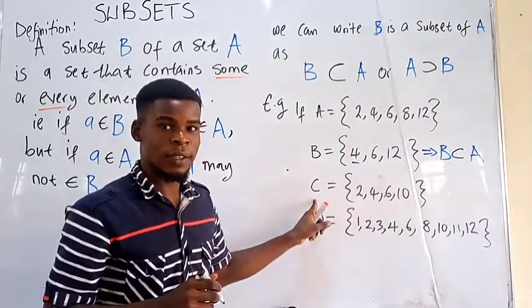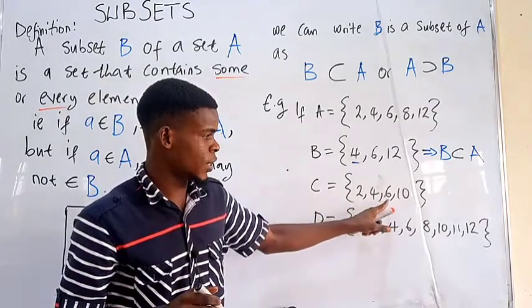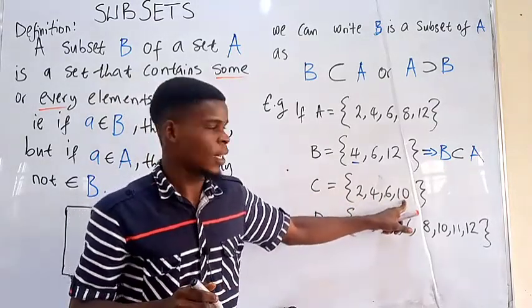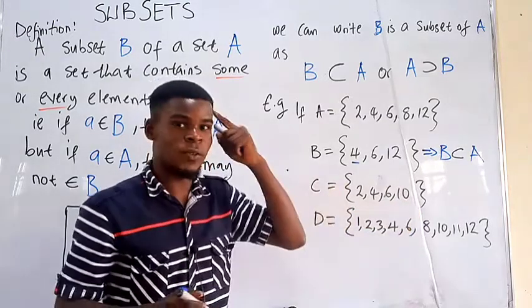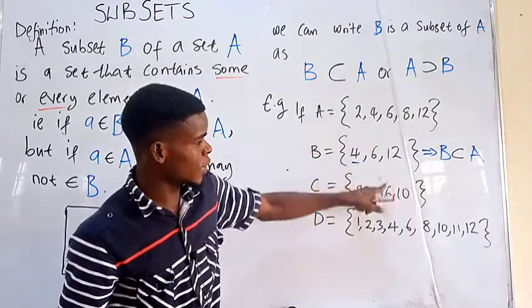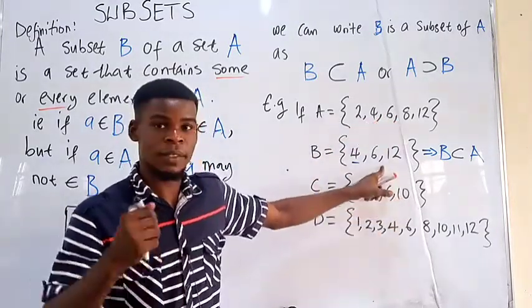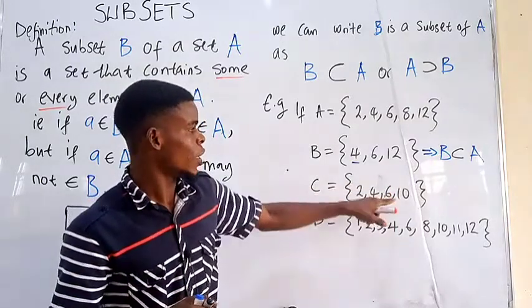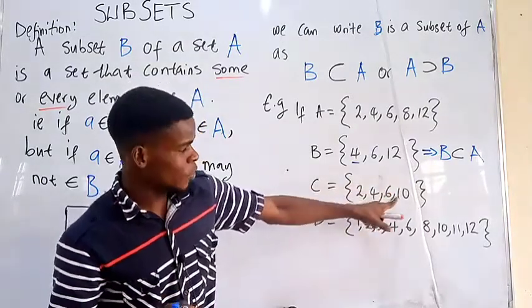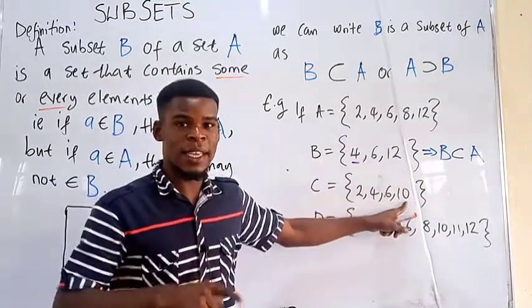Another example here, be very careful with this one. We have C to be 2, 4, 6, 10. Here is the question for you. Is C a subset of A? Look at it. This is 2, 4, 6. Well, if it stopped here, it would be the same thing as this, but no. If it stopped at 6, we would say that C is a subset of A, but we've included an element, 10.